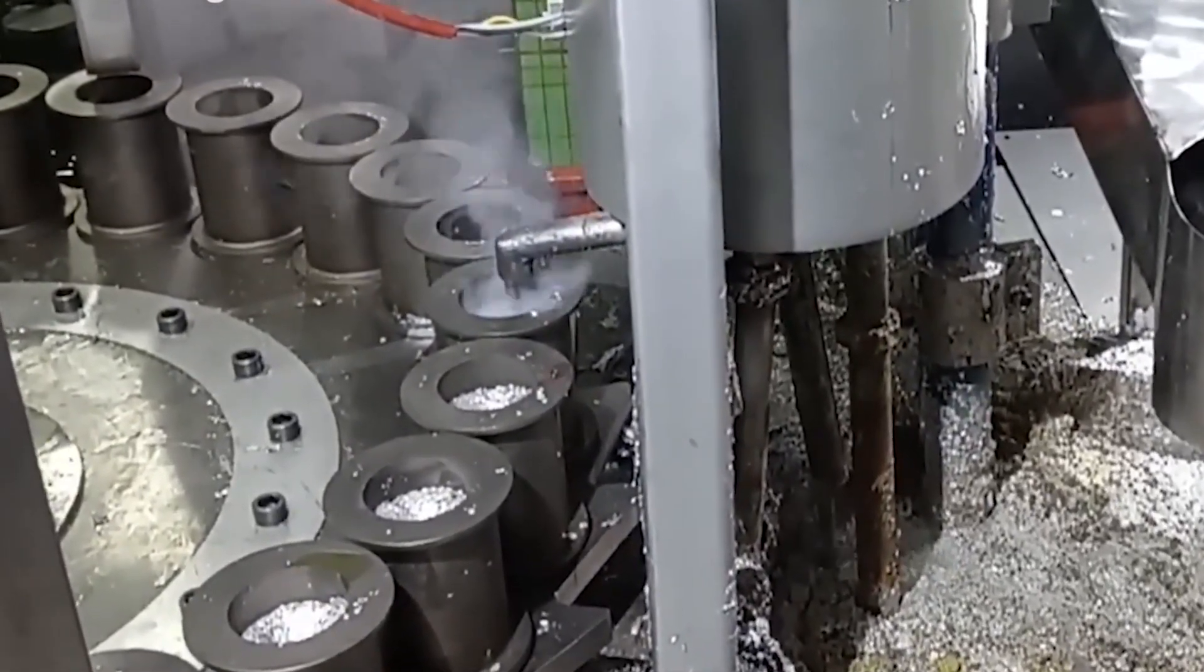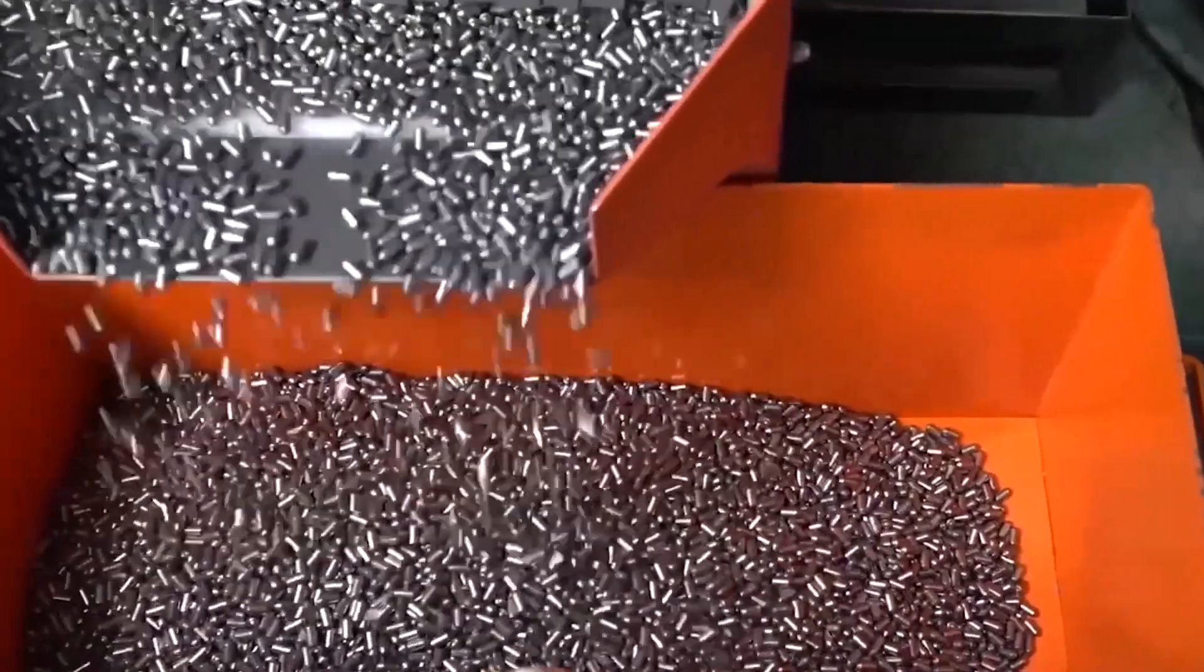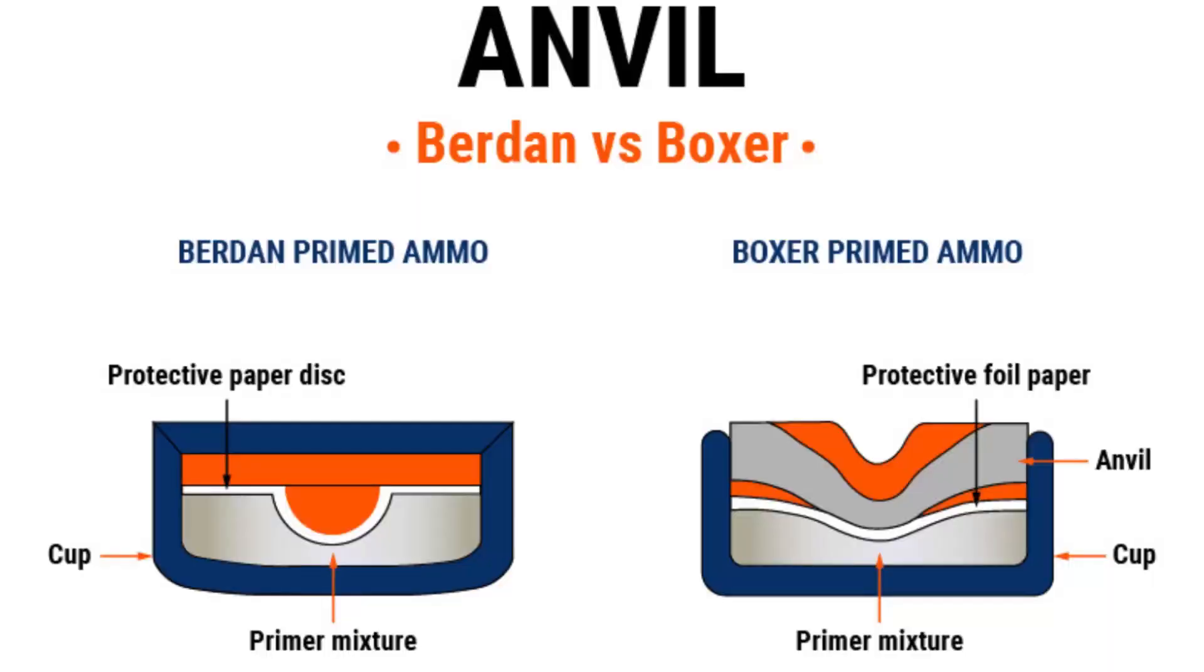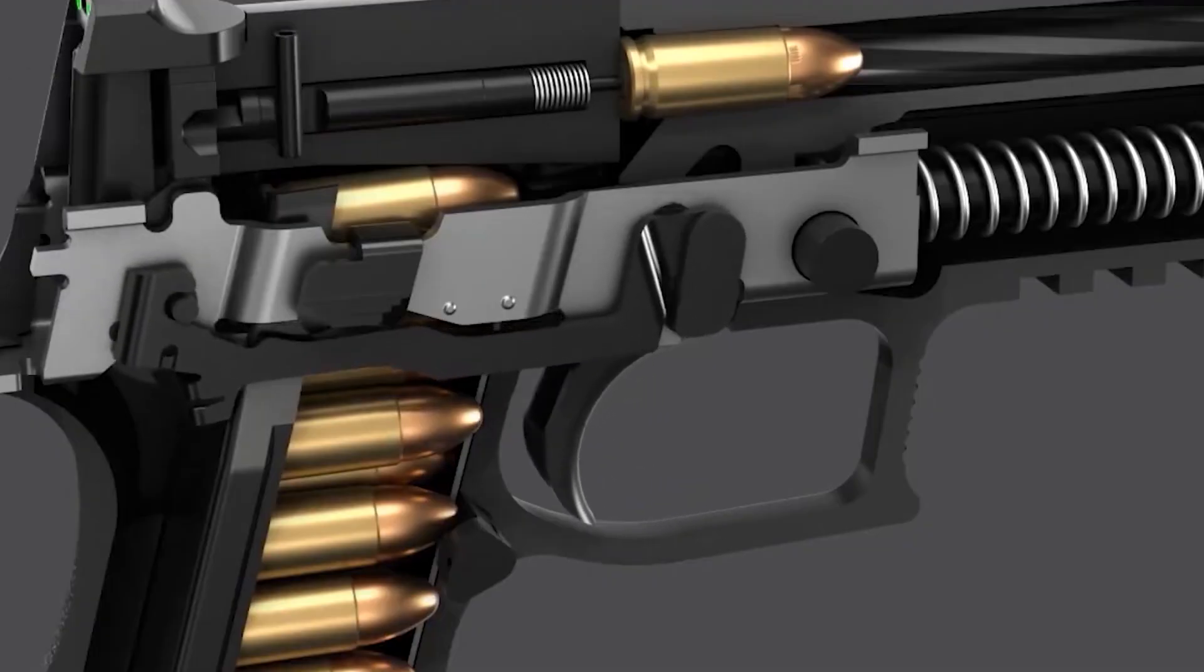An anvil, a small metal piece that concentrates the force of the firing pin strike, is then inserted into each primer cup, and the assembly is sealed. The primers must then dry under carefully controlled conditions to achieve the proper sensitivity, responsive enough to ignite reliably when struck, but stable enough to handle safely.